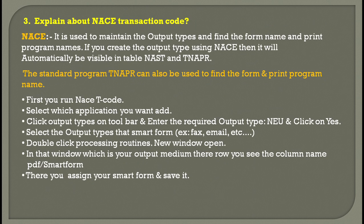Can you explain anything about the NACE transaction code? NACE is basically used to maintain the output types and to find the form name and print program names. If you create an output type using NACE, it will automatically be visible in the tables NAST or TNAPR. The standard program TNAPR can also be used to find the form and print program name. To use it, you first run the NACE T-code and select which application you want to add.